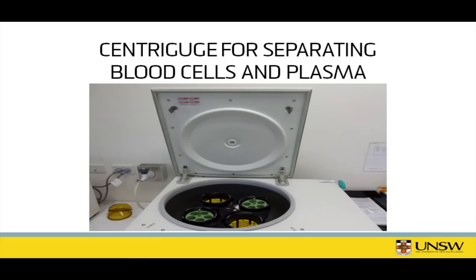There are cells and plasma in the blood. Here's a picture of a centrifuge sitting on a desktop. We put tubes of blood into these centrifuges. The centrifuge works for five or ten minutes, spinning at maybe a thousand times per minute, and that achieves a separation of cells and plasma.